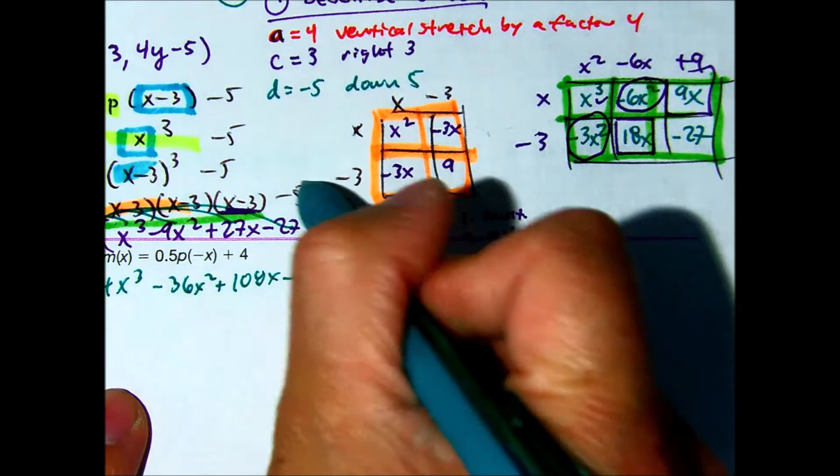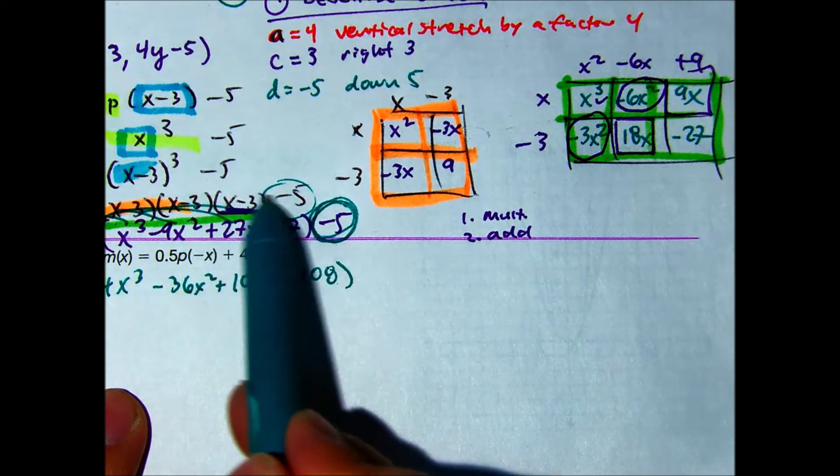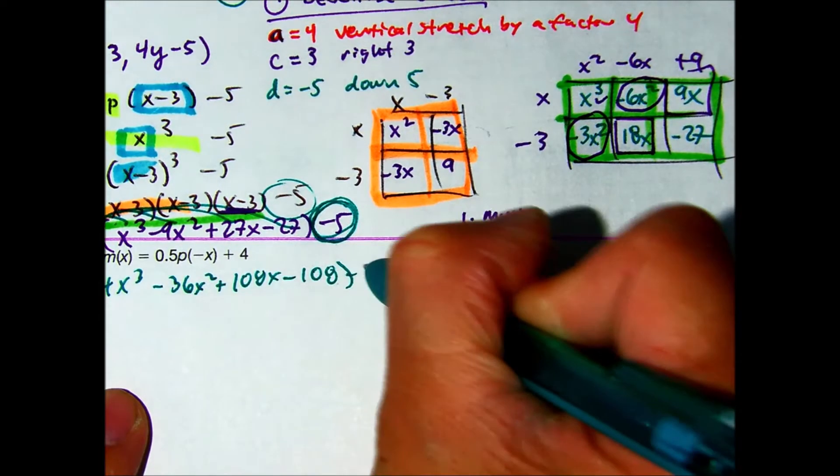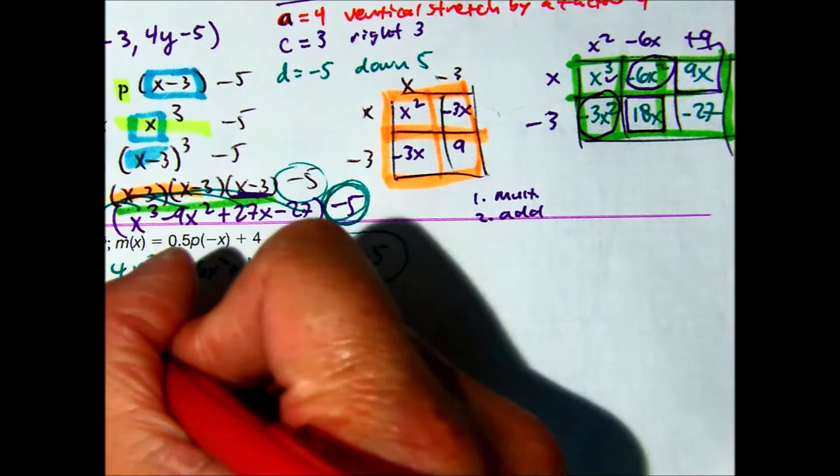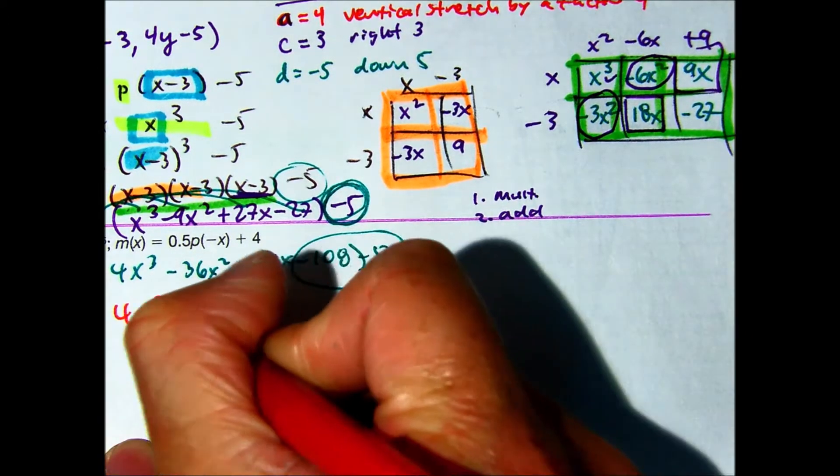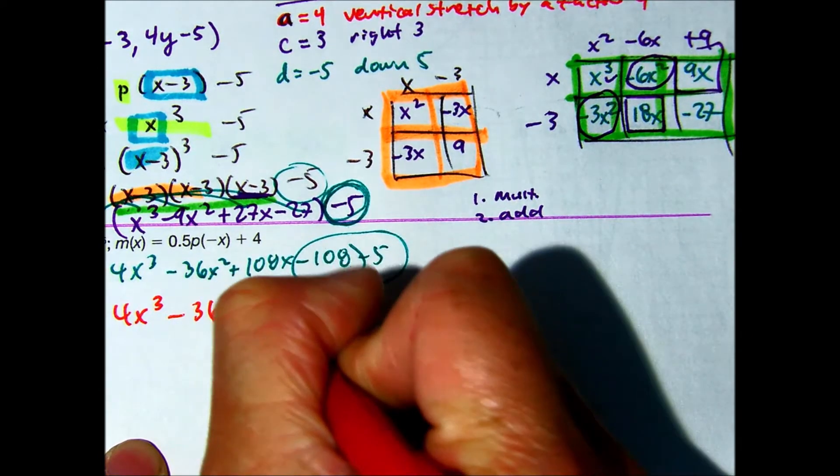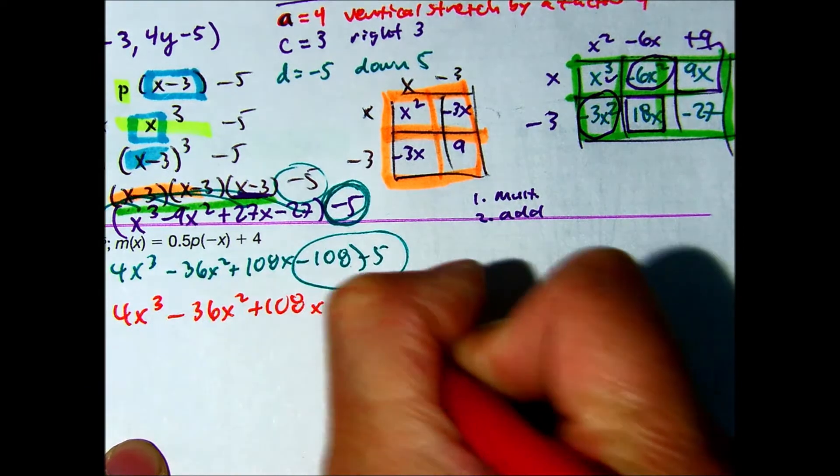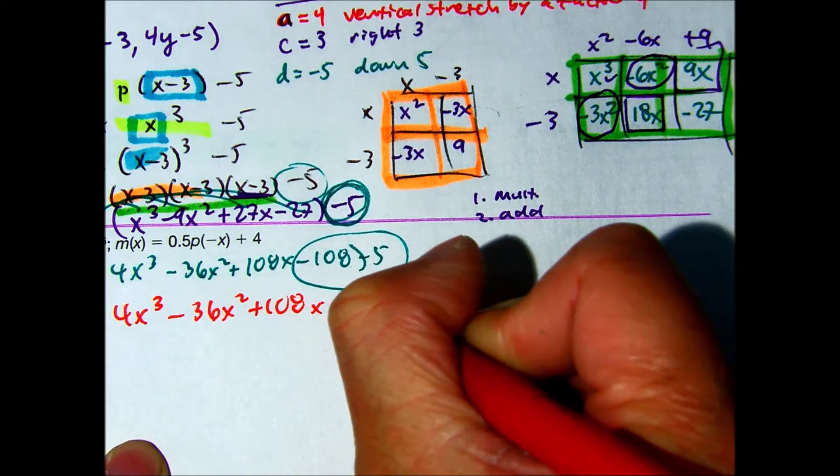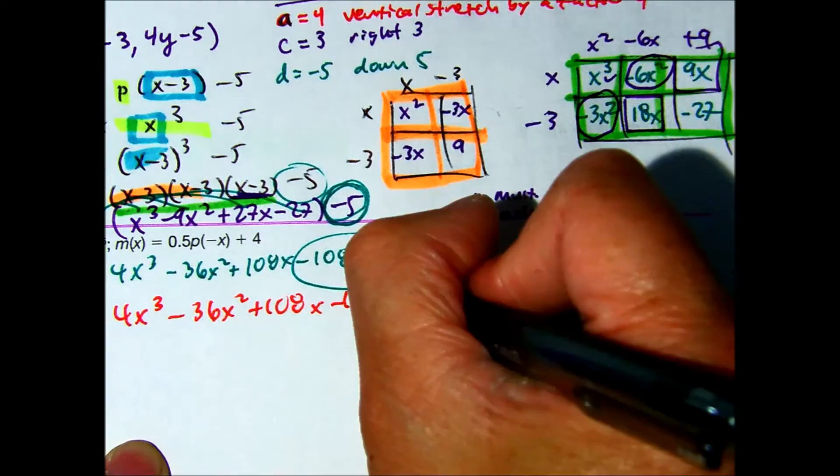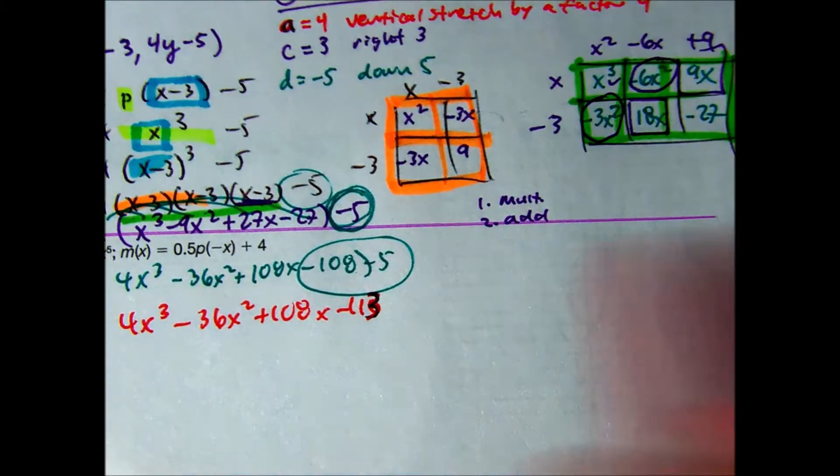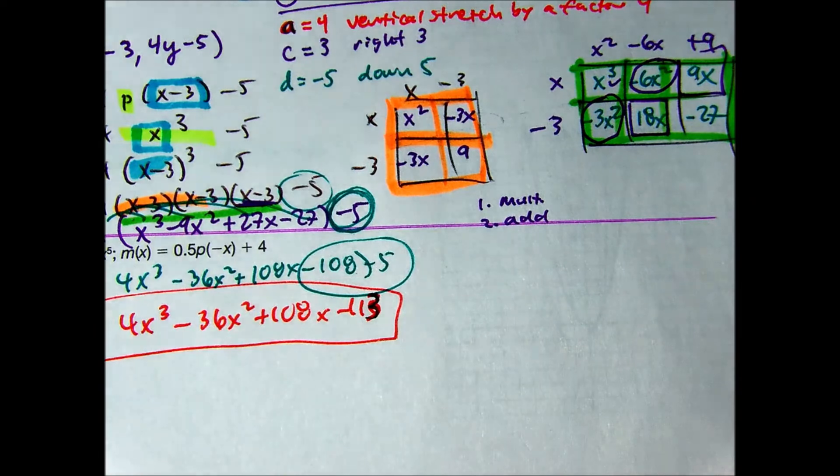So I get 4x cubed minus 36x squared plus 108x minus 108. And then this was the common mistake for last year. Students forgot about this minus 5. So notice how I keep repeating it. So if I just subtract 5, which is basically right there, my final answer is 4x to the third minus 36x squared plus 108x minus 113. That should be a 13. Let's make that a 13.